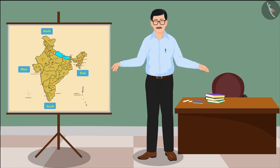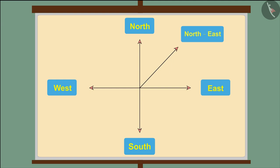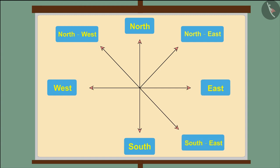There is one more direction — the direction in the middle of north and east. It is called north-east. Similarly, the direction in the middle of north and west is called north-west. The direction between south and east is called south-east.